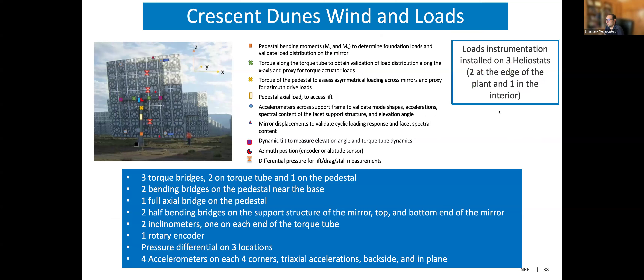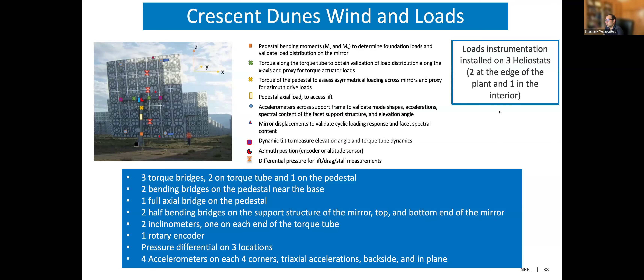For the loads instrumentation, we have three heliostats fully equipped with strain gauges, accelerometers, inclinometers, rotary encoders, and pressure differentials measuring pressure on both the front-facing and back-facing surfaces at three different locations. Two heliostats are at the edge and one is further in the interior. We are still analyzing this dataset. In the coming year, we will develop it into a full open-source dataset just like the trough data and publish all the conclusions.